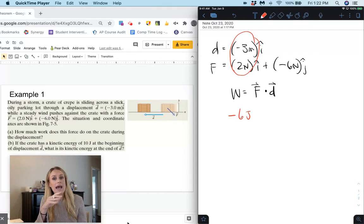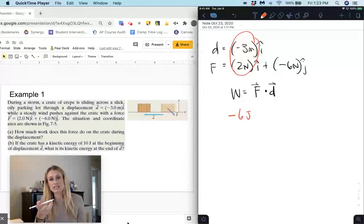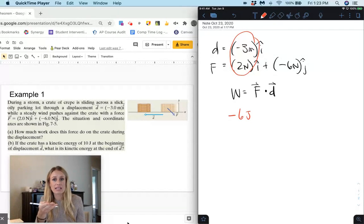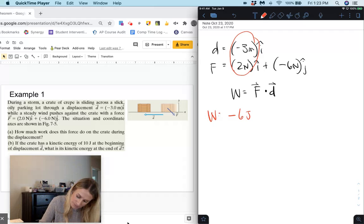Now we have a force in the j-hat direction but because our distance or displacement is only in the i-hat direction, the x-direction, that force is actually doing no work on this object. So our only work being done is this negative 6 joules.